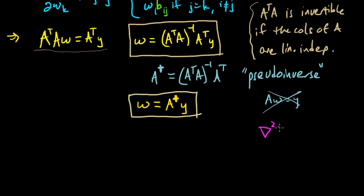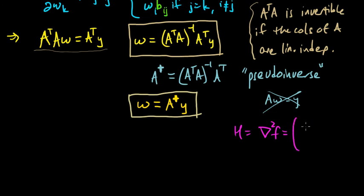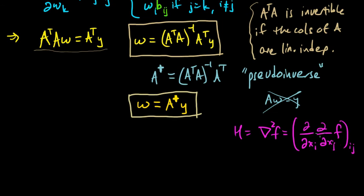The Hessian, sometimes written ∇² of a function or H, is the matrix of second derivatives. The (i,j)th entry of this matrix is the second partial derivative of F with respect to x_i and x_j. So let's compute this Hessian.